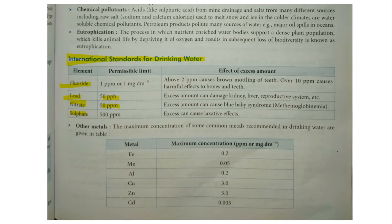Permissible limits for other metals in drinking water: iron is 0.2 ppm, manganese is 0.5 ppm, aluminium is 0.2 ppm, copper is 3 ppm, zinc is 5 ppm, and cadmium is 0.005 ppm — cadmium is very low and must be kept minimal.